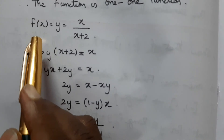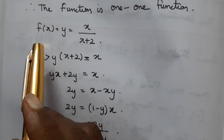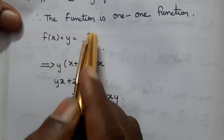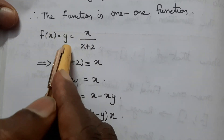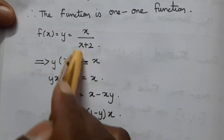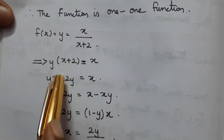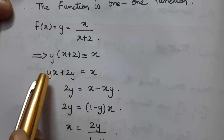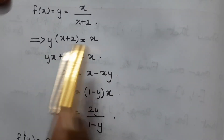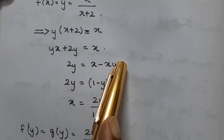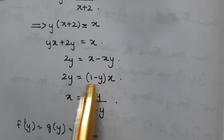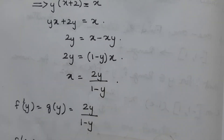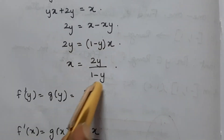Since the function is one-to-one, the inverse can be found. Setting y equals x divided by x plus 2, we get y times x plus 2 equals x. So xy plus 2y equals x, giving 2y equals x minus xy, so 2y equals x times 1 minus y. Therefore x equals 2y divided by 1 minus y. So f inverse of x equals 2x divided by 1 minus x.